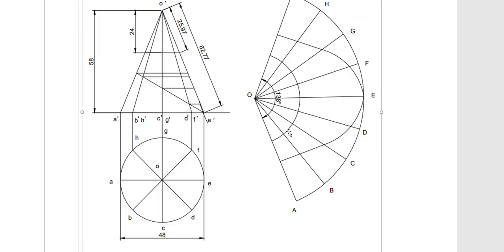Using all those points, draw a smooth curve. The top portion and bottom portion are removed, so the remaining portion is the middle section. This is how you draw the development of the remaining portion. Hope you understood this video. Thank you very much for watching.